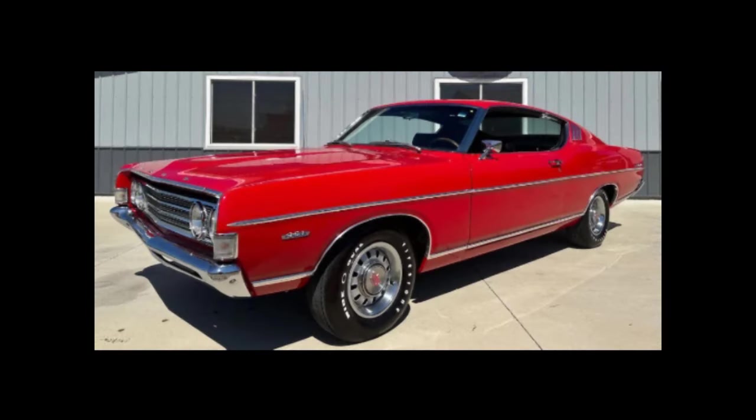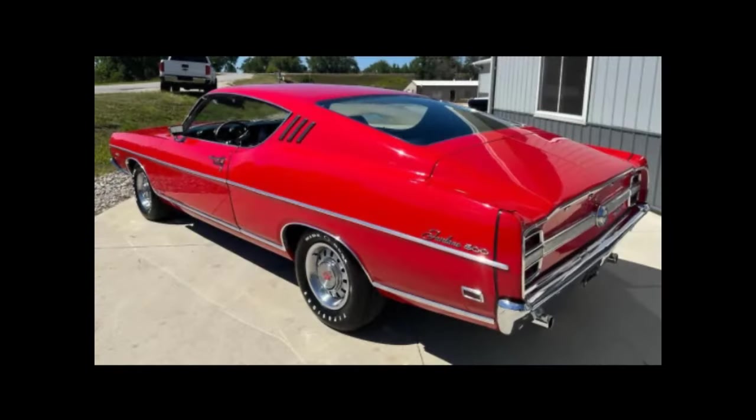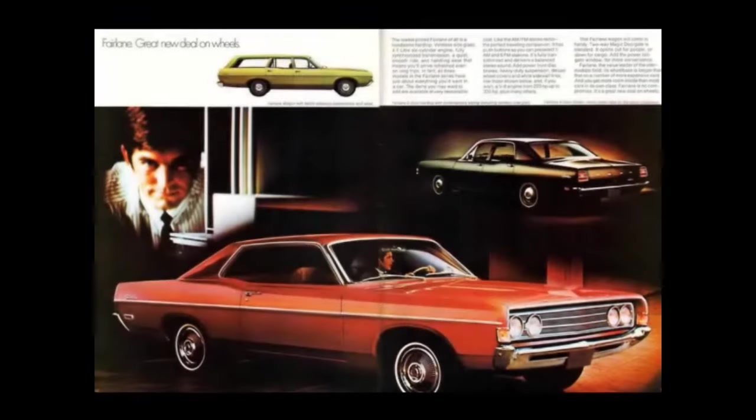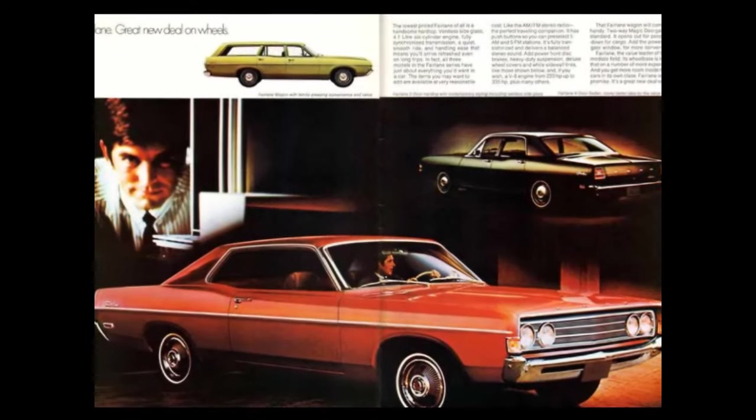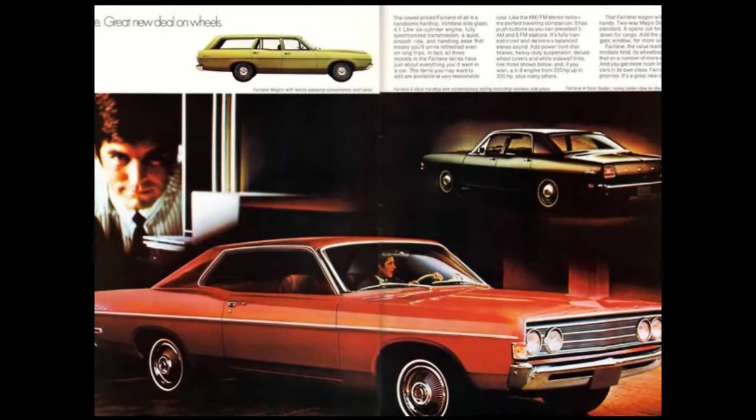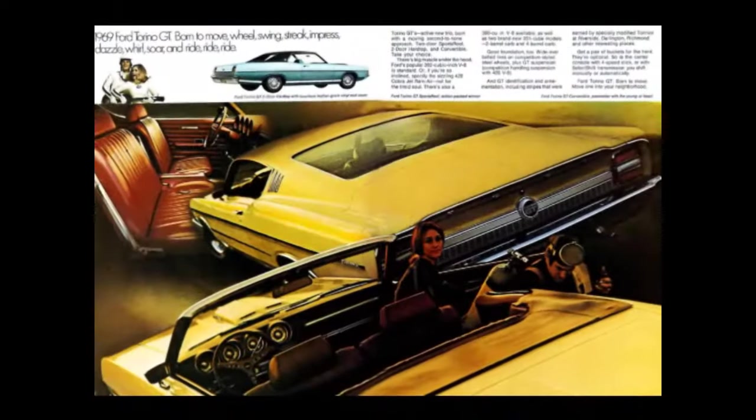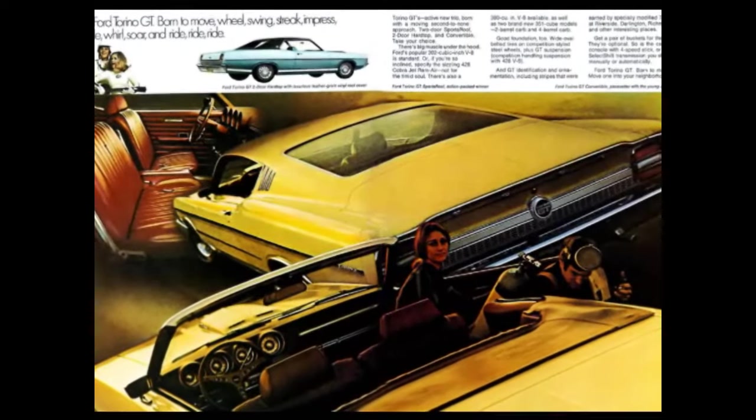Ford has once again offered its stylish Ford Fairlane Fastback body style to the buying public. In the 1968 and 1969 model years, the intermediate Ford line consisted of lower trim Fairlanes and its sub-series, the upper trim Torino models.